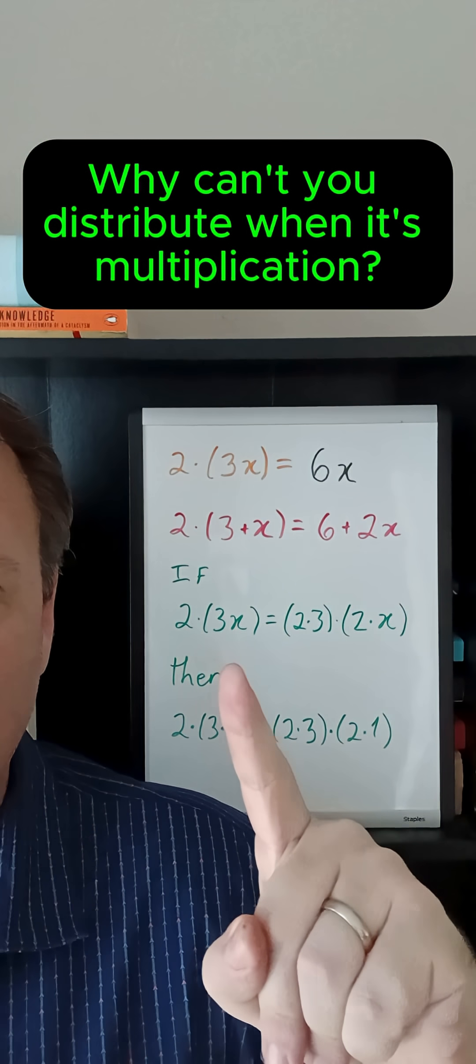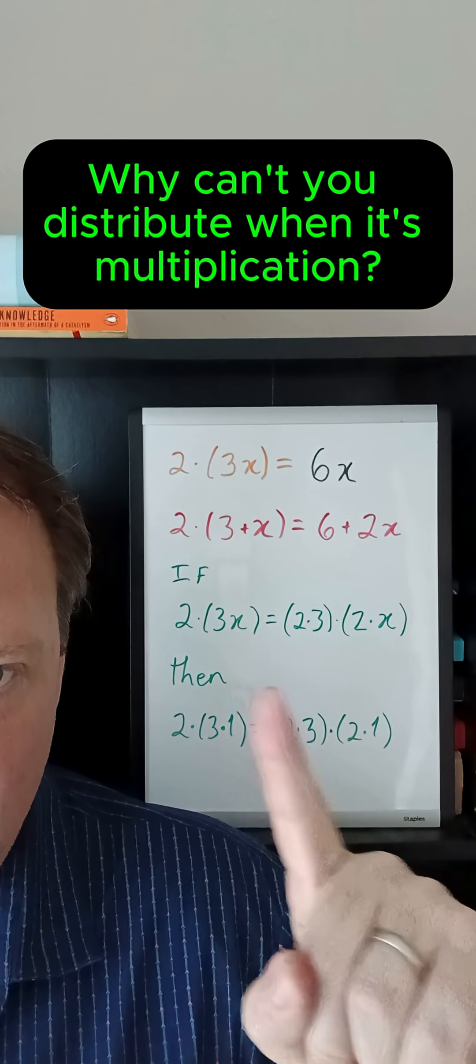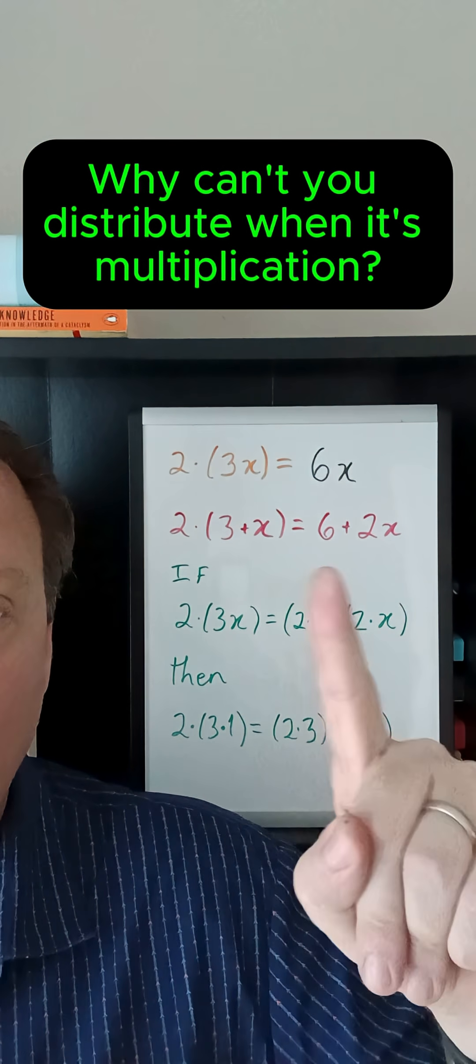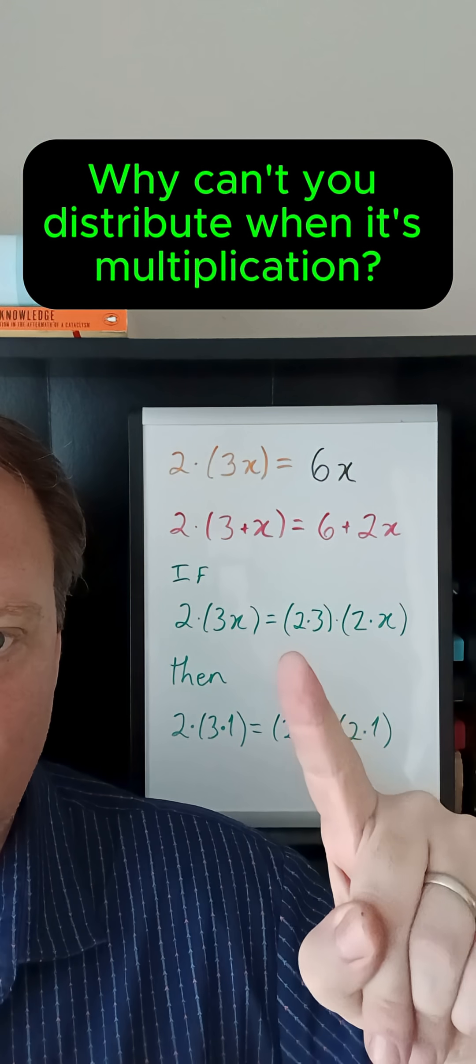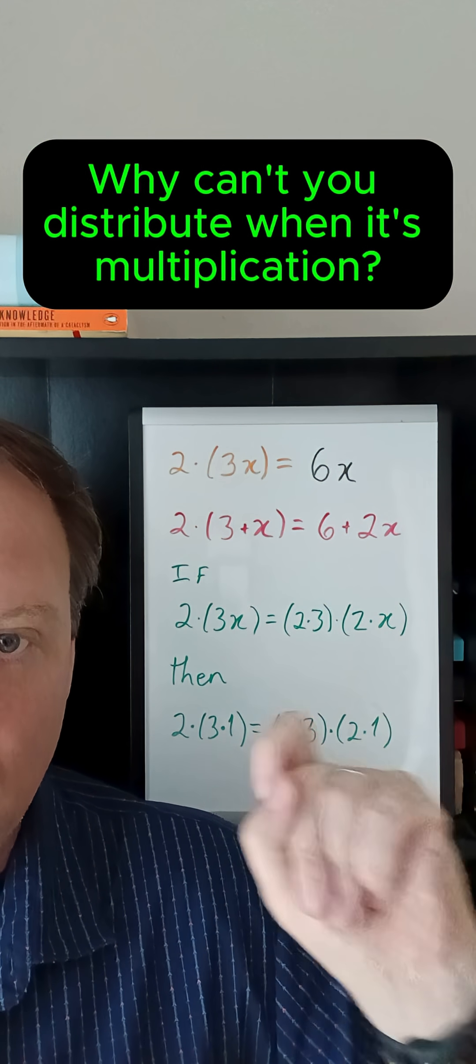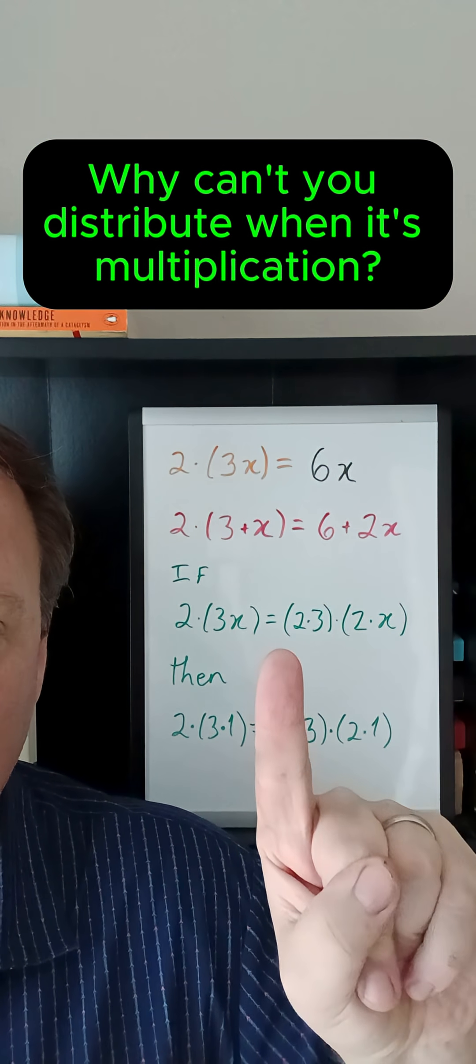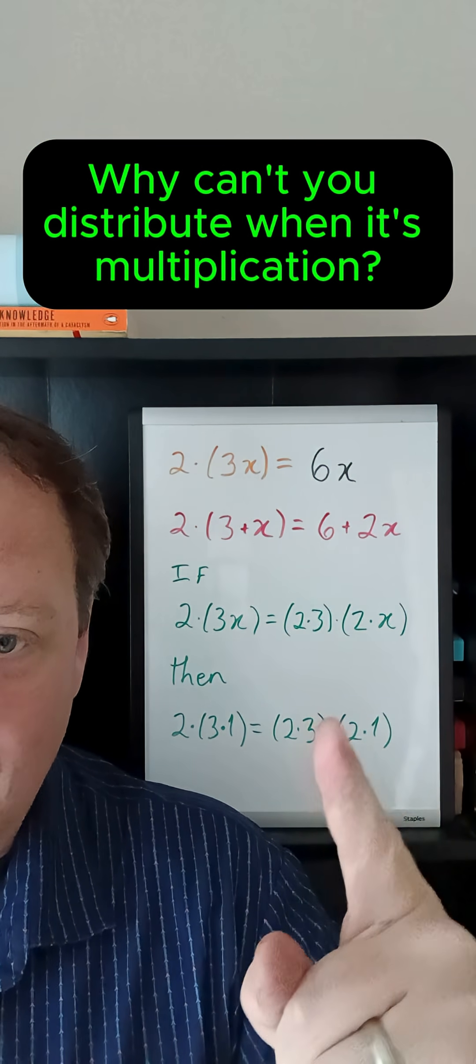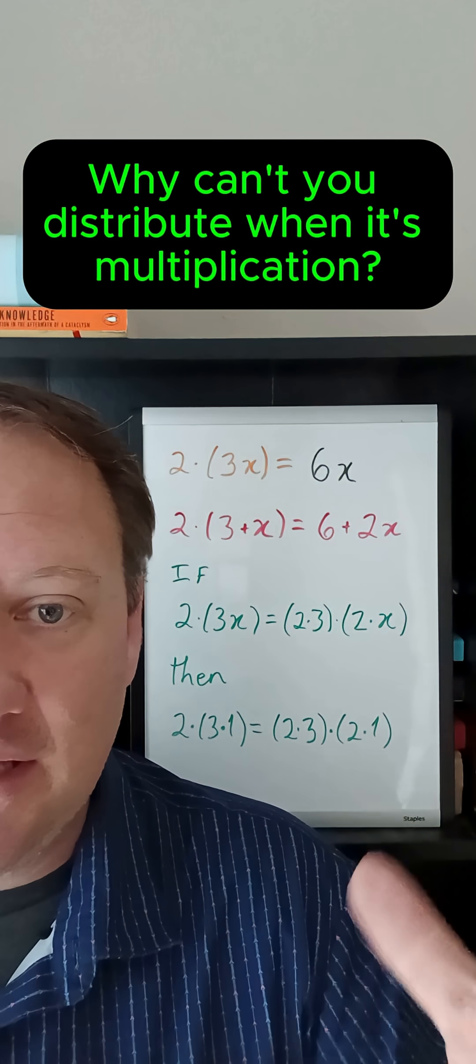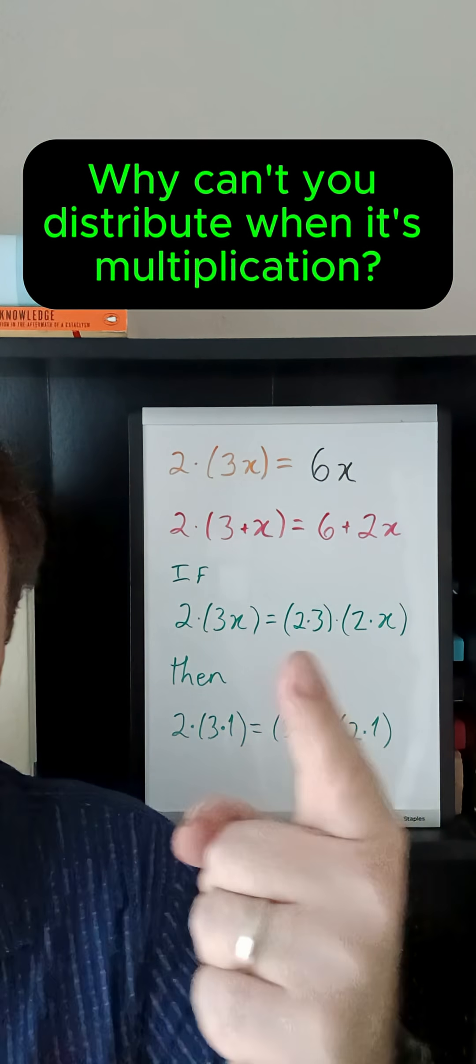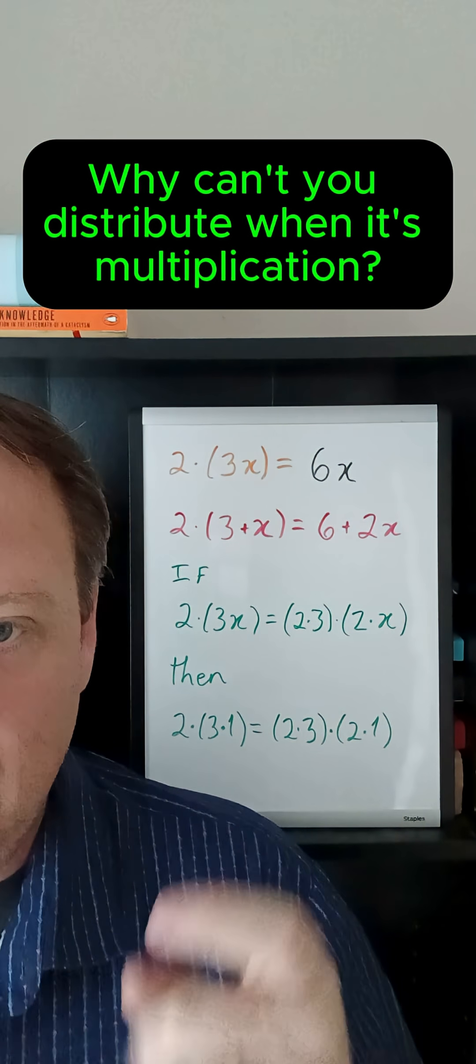But if you use distribution when there are parentheses, then you would say something like two times parentheses three x is equal to two times three, right distributing the two to the three, and then also distributing the two to the x, you would get an equation like this. Well, that cannot possibly be right. And we can see that by picking some specific value of x and doing the computation.